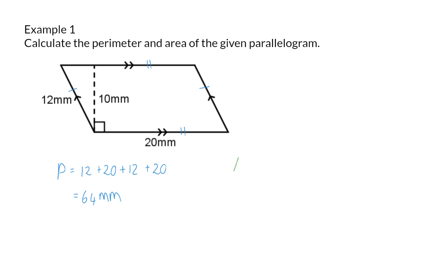For the area of this shape, we now know the formula is base times perpendicular height. In this case, we can use the base of 20. And now it is important to remember that the height is not the side of 12, but the perpendicular height of 10. So the area will be 200 millimeters squared.